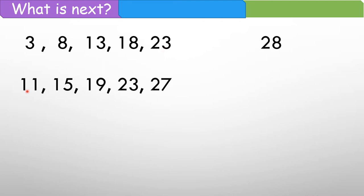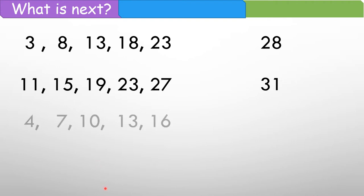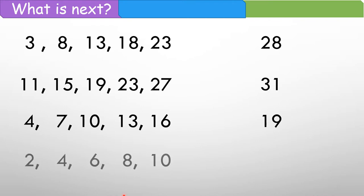Next, we have 11, 15, 19, 23, and 27. Kung i-check mo ulit, ang dagdag niya ay 4. So dapat ang sunod nito is 31. Next, we have 4, 7, 10, 13, 16. Ang dagdag niya ay 3. So next number should be 19. Next, we have 2, 4, 6, 8, 10. Eto madali lang, kasi mahalata mo na nag-skip counting lang with 2. Kaya 2, 4, 6, 8, 10 — dapat ang kasunod ay 12.